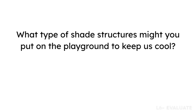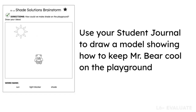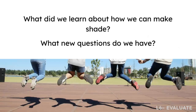In the evaluate portion, students will draw their final ideas for a shade solution. You will begin by asking what types of shade structures might keep them cool. Then you will have students work independently to draw an initial model of how they could keep Mr. Bear cool on the playground in the Shade Solutions Brainstorm student journal page. To support student sense-making across the unit, orient them back to the driving question board. Ask what did we learn about how we can make shade, and what new questions do we have?